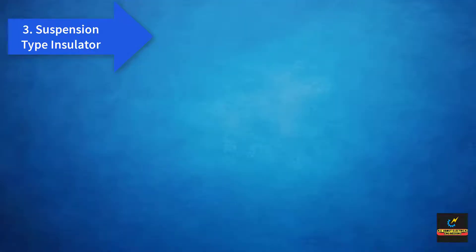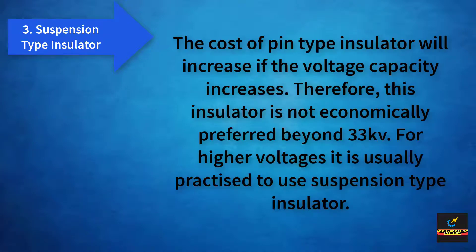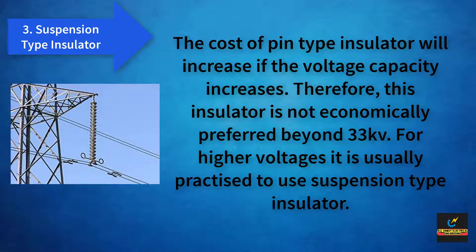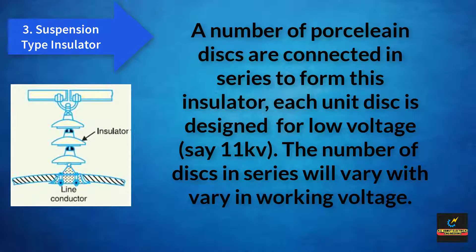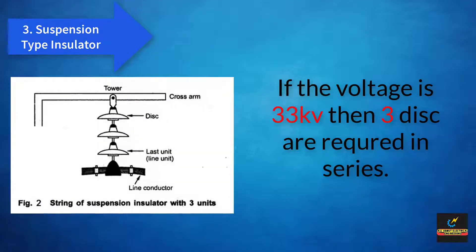The third type of insulator is the suspension type insulator. The cost of pin type insulators increases as the voltage capacity increases; therefore, this insulator is not economically preferred beyond 33 kV. For higher voltages, it is usually practiced to use suspension type insulators. A number of porcelain disc type insulators are connected in series to form the insulator string. Each disc unit is designed for a low voltage, say 11 kV. If the working voltage is 33 kV, then three disc types are required in series.